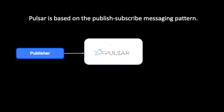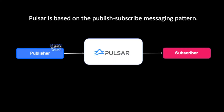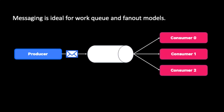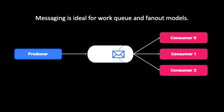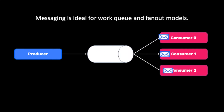In Pulsar, the messaging system is built on the Pub-Sub, or publish-subscribe, pattern. This design is the framework Pulsar uses for exchanging messages. Pulsar also supports other common messaging paradigms such as work queue and fan-out models.